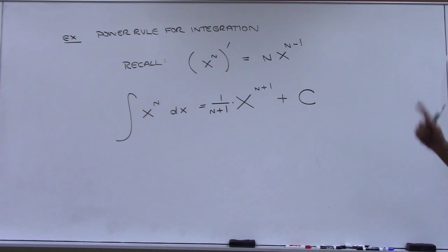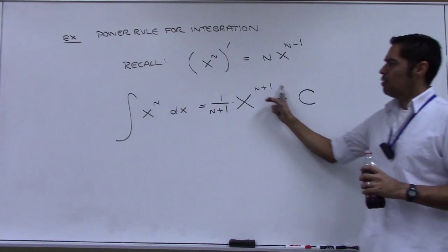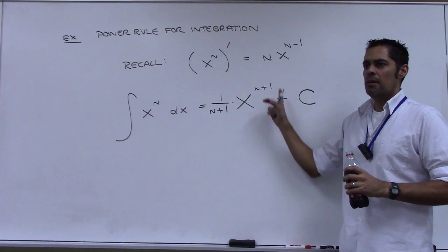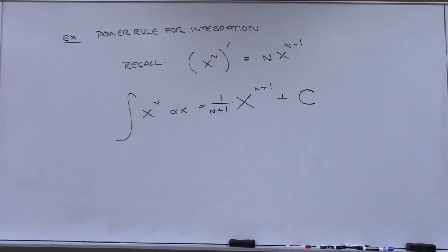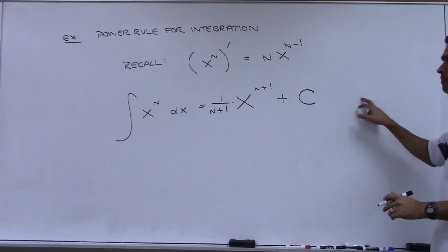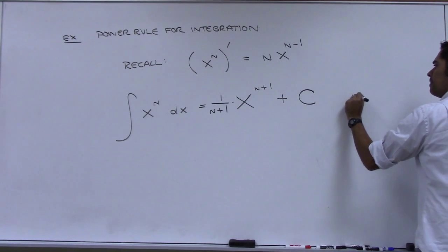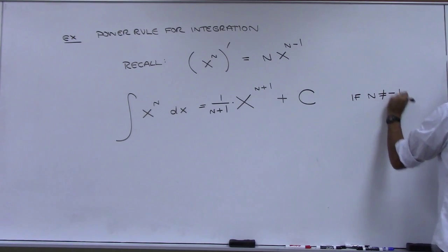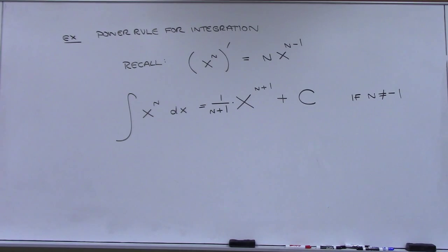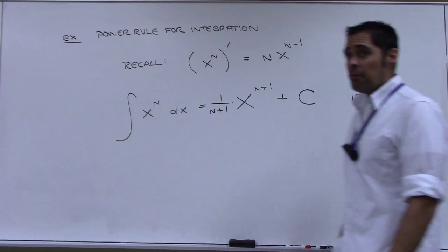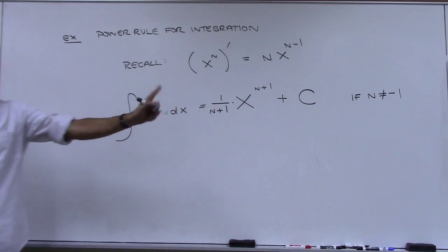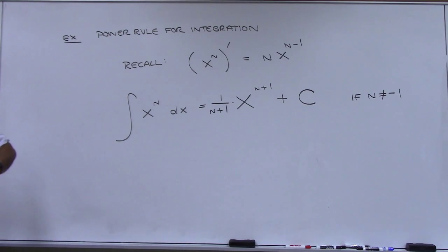There's one case where it doesn't work though. Can you see where it wouldn't? If n is negative one, that formula falls apart because you'd have division by zero. So I need to put a note: this works if n is not negative one. It's a good formula, but it doesn't hold for that one particular value of n. Let's investigate that one scenario.